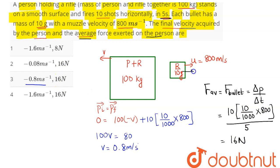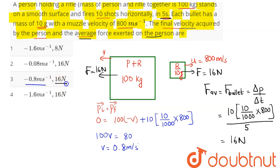16 newton force is applied on the bullet in the plus x direction. By Newton's third law, the same force is applied in the minus x direction on the person. So the answer is: 16 newton force and 0.8 meter per second velocity for the person — option number three is the correct answer.